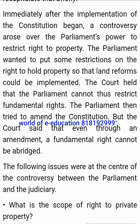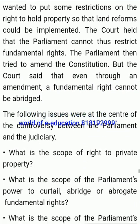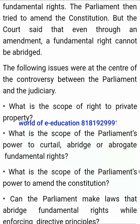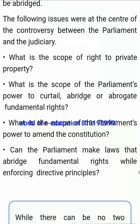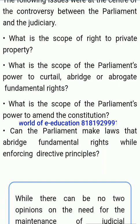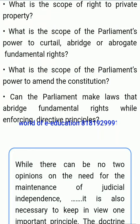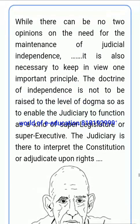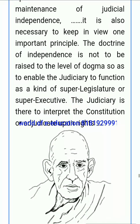There were differences between the parliament and the judiciary over the right to property and the parliament's power to amend the constitution. Immediately after the implementation of the constitution began, a controversy arose over the parliament's power to restrict right to property. The parliament wanted to put some restrictions on the right to hold property so that land reforms could be implemented. The court held that the parliament cannot thus restrict fundamental rights. The parliament then tried to amend the constitution, but the court said that even through an amendment, a fundamental right cannot be abridged. The following issues were at the center of the controversy: the scope of the right to private property, the scope of the parliament's power to curtail or abrogate fundamental rights, the scope of the parliament's power to amend the constitution, and whether the parliament can make laws abridging fundamental rights while enforcing directive principles.